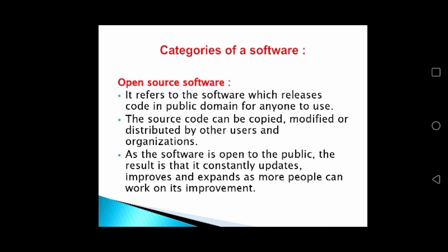There are different categories in software. Number one is open source software. Open source software refers to software which releases its code in the public domain for anyone to use. The code is freely available. The source code can be copied, modified, or distributed by other users and organizations.